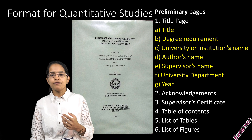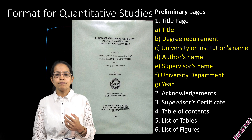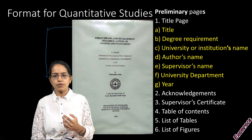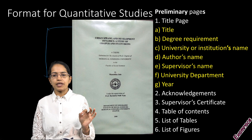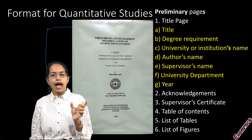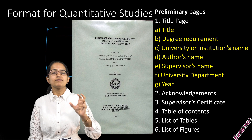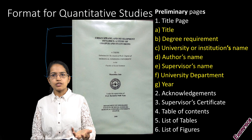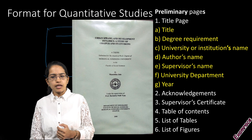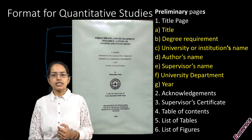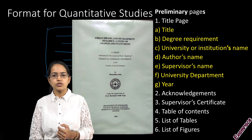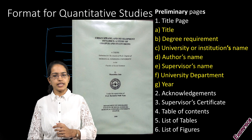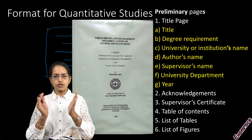What you need first is a title page. This title page would have the title — the topic of the research that you would be doing — the degree requirements that you are submitting for, the name of the university, your name, your supervisor's name, the name of the university, and the year in which you are trying to publish.